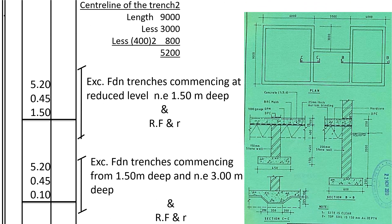Center line for trench 2 — this trench here. The length of that trench: we take the total length 9,000 and deduct 3,000 up to here, remaining with 6,000. Then we deduct: when excavating this trench we have the spread on this side, which is 200, and this side 200. But 6,000 is from outside the wall to outside the wall, so we need to deduct wall and spread 400, and wall and spread another 400. So 400 times 2 equals 800, giving a difference of 5,200.